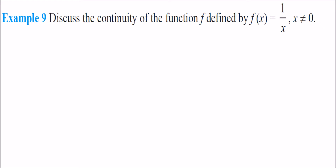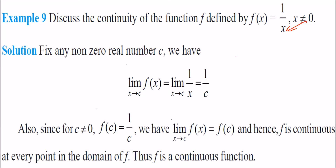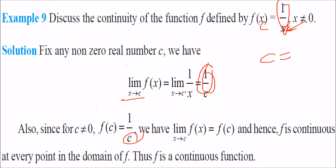Discuss the continuity of f(x) = 1/x, where x ≠ 0. For any c ≠ 0, f(c) = 1/c and the limit as x→c is also 1/c, so they are equal and f is continuous at every point in its domain. However, c cannot equal 0 since 1/x is not defined at x = 0. So f is a continuous function for all values which are not zero.